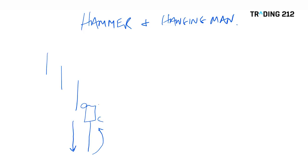This is the Hammer. The psychology here: the market is pushing lower, we're seeing lower prices, people are happy to sell into that weakness. But at some point during the day, the buyers step back in and lift the market up. So we have this long shadow or wick on the candlestick and a relatively small body.